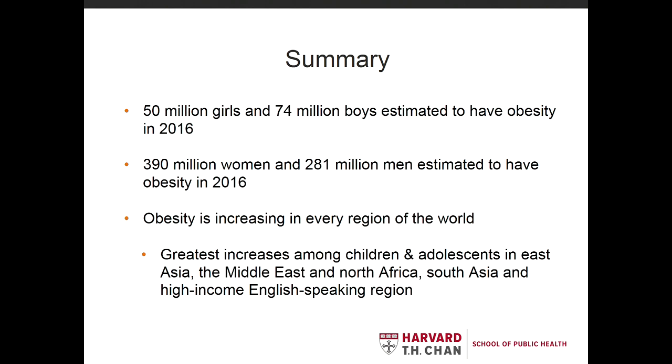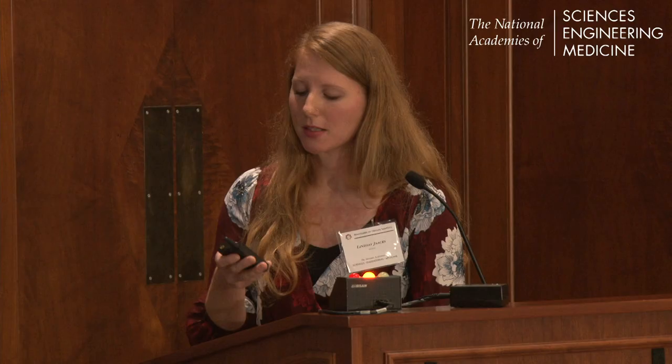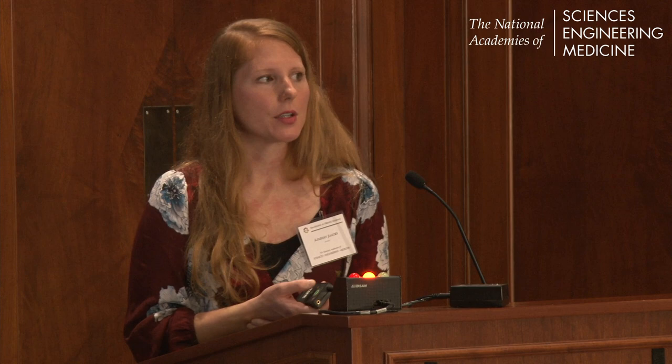In summary, there is a very large population of children and adults experiencing overweight and obesity. It's increasing in every region of the world — we do not have any regions where it's decreasing. The greatest increase specifically among children and adolescents has been in East Asia, South Asia, and the Middle East and North Africa. Thank you so much and I look forward to questions.